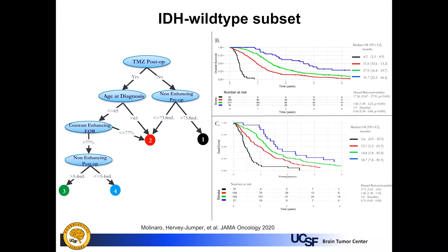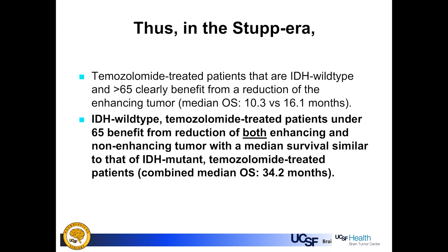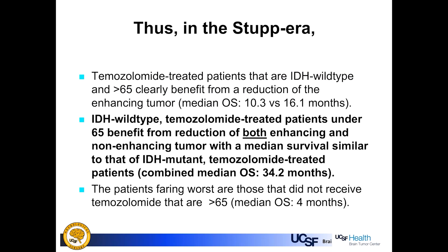Looking at the IDH wild-type group alone, we see similar curves. The poorest performers are those not receiving temozolomide with greater pre-operative non-enhancing tumor volume, while the best performers are younger patients with greater extent of resection of both enhancing and non-enhancing disease, as shown in the RPA trees and Kaplan-Meier survival curves. In the temozolomide era, IDH wild-type patients over 65 benefit from cytoreduction of the enhancing tumor, while IDH wild-type patients under 65 benefit from reduction of both enhancing and non-enhancing tumor, with median survival similar to IDH mutant temozolomide-treated patients.